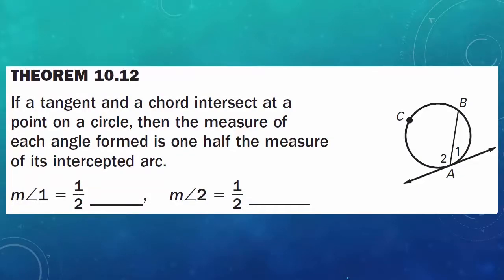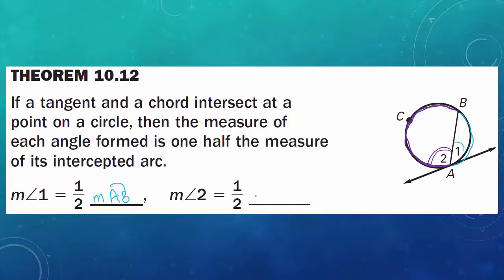We start with Theorem 10.10. If a tangent and a chord intersect at a point on a circle, then the measure of each angle formed is one-half the measure of its intercepted arc. So the measure of angle 1 is one-half the measure of arc AB. Angle 2 is one-half the measure of its intercepted arc, which goes from B to C to A — so the measure of angle 2 is one-half the measure of arc BCA.